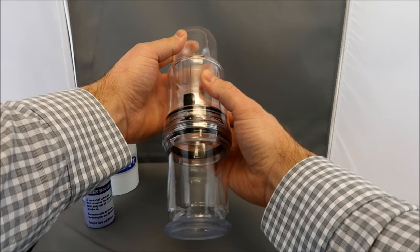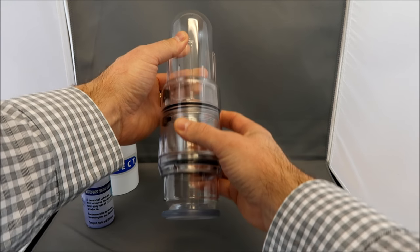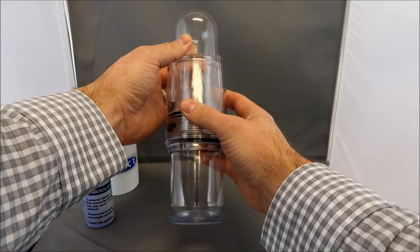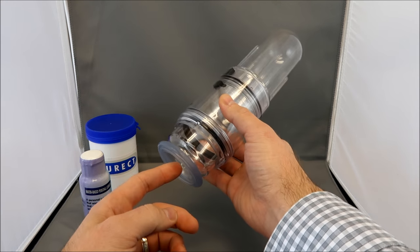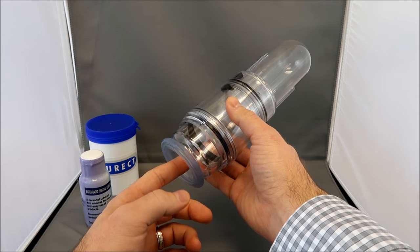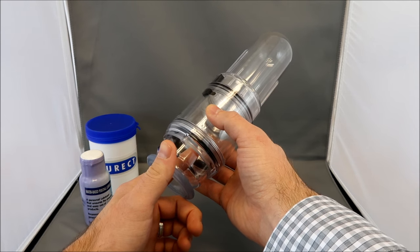Slide the sleeve up and down to create the vacuum pressure. The head of the penis will begin to be drawn through the tension system and into the cylinder as you achieve the erection.